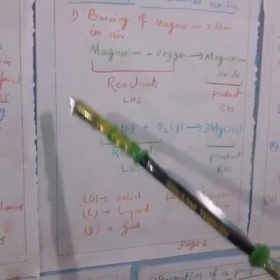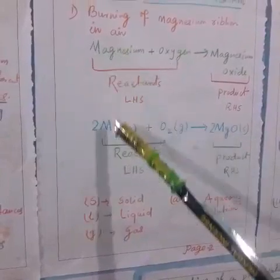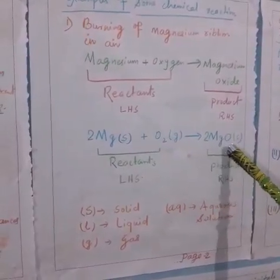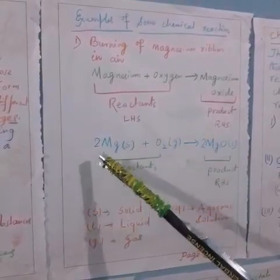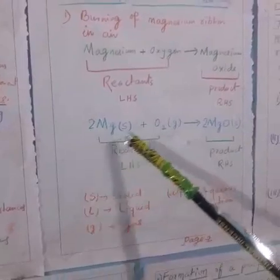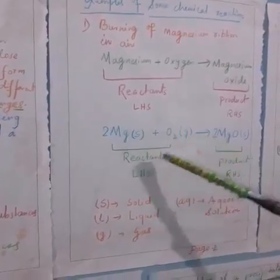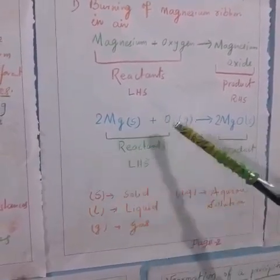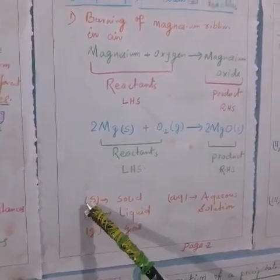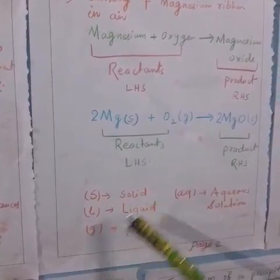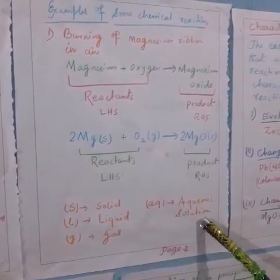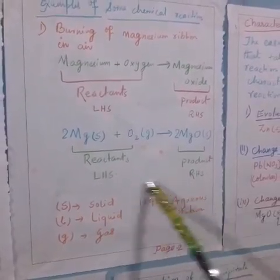This one can be written in the form of formula also like magnesium-Mg, oxygen-O2 gives magnesium oxide. This is the balanced chemical equation because number of molecules of each one is given. Here magnesium and oxygen are reactants while magnesium oxide is a product. Here, there are some abbreviation like S means solid state, L means liquid state, G means gaseous state and AQ means aqueous solution. These are the physical state of the reactant and product.